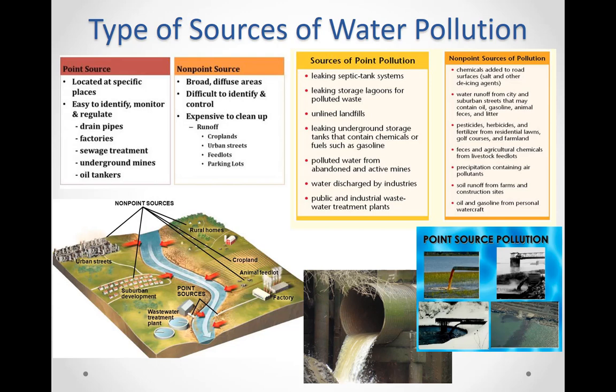What are point sources of water pollution? Point sources are those sources that can be easily identified, such as a specific drain pipe, a factory effluent, sewage treatment plant, an underground mine, or an oil tanker. These are very specific places that we can clearly identify, such as the one shown here.